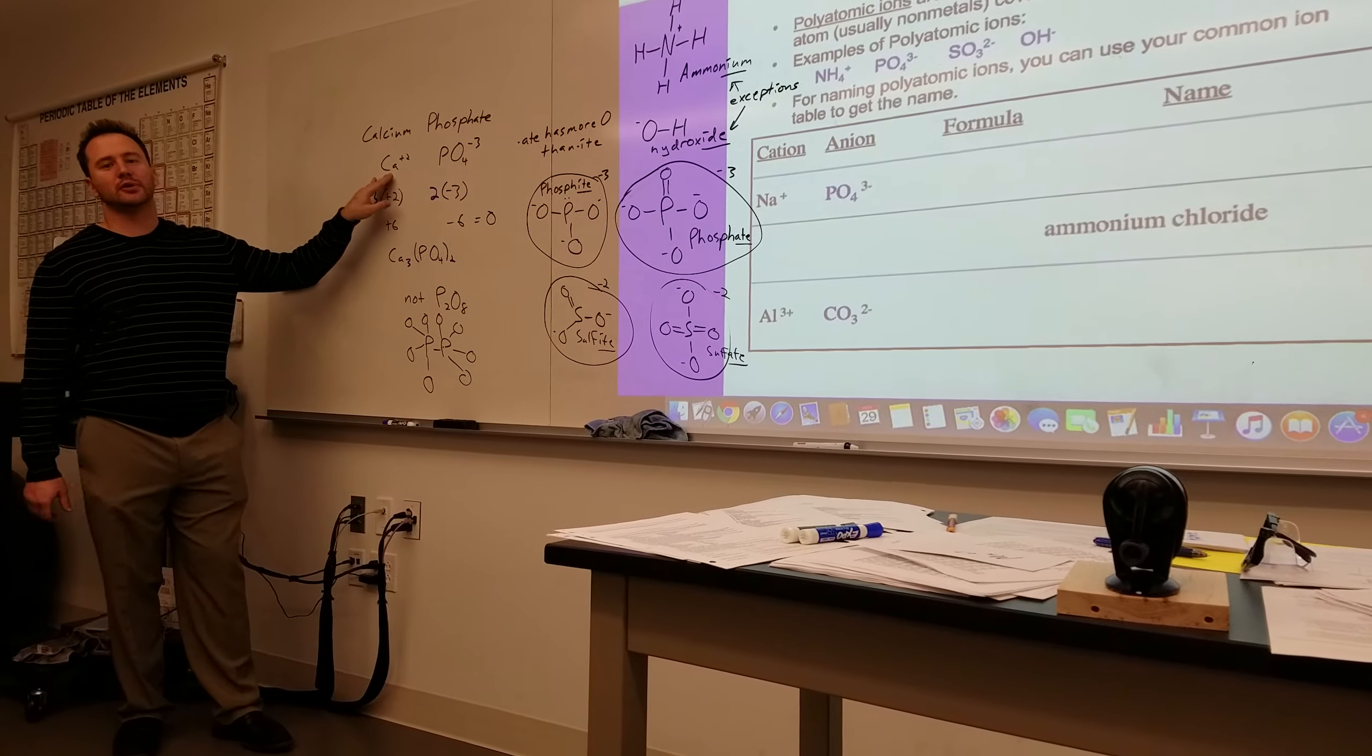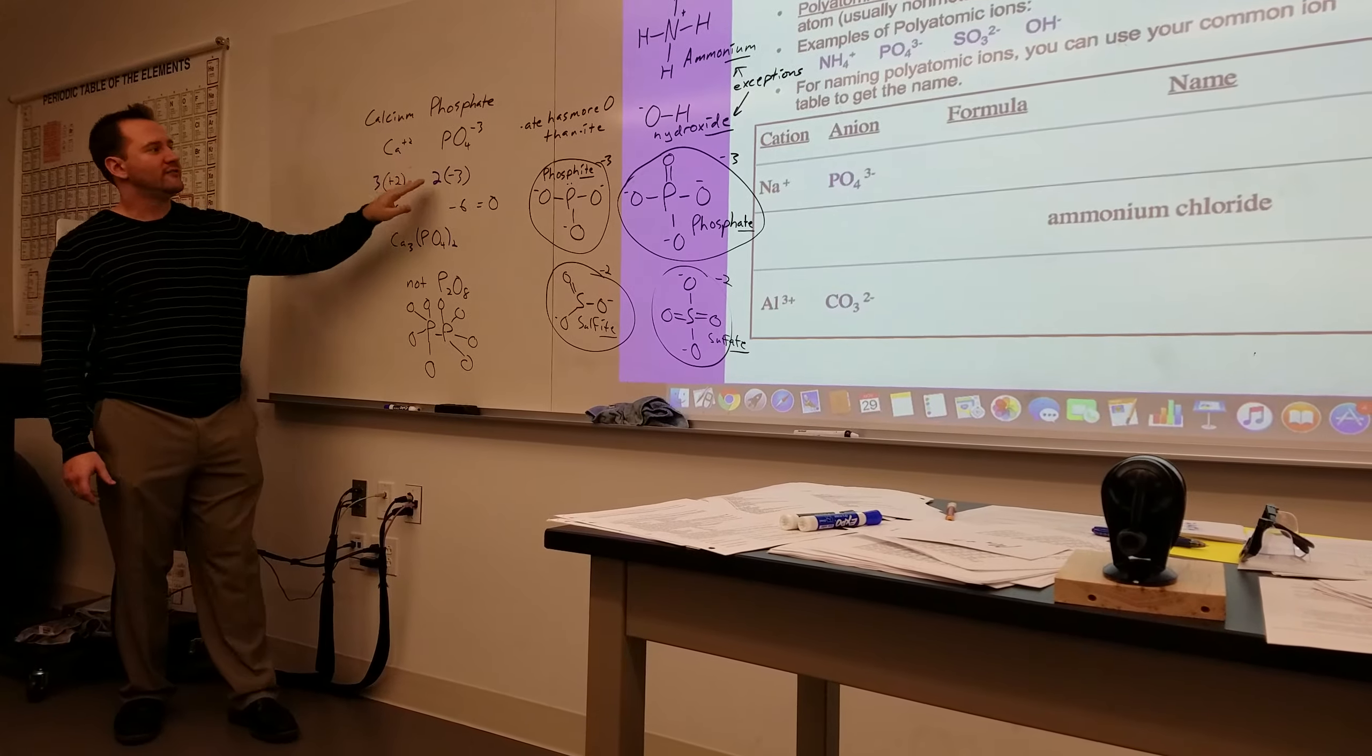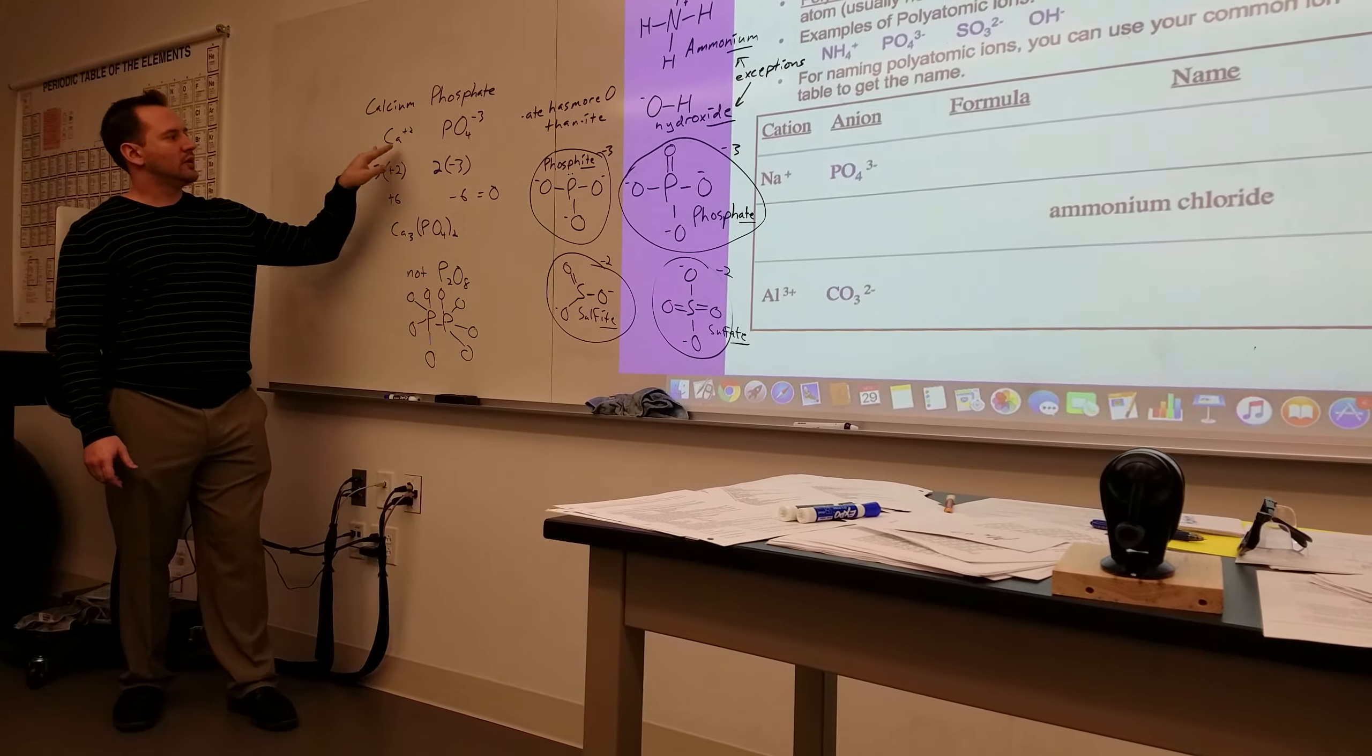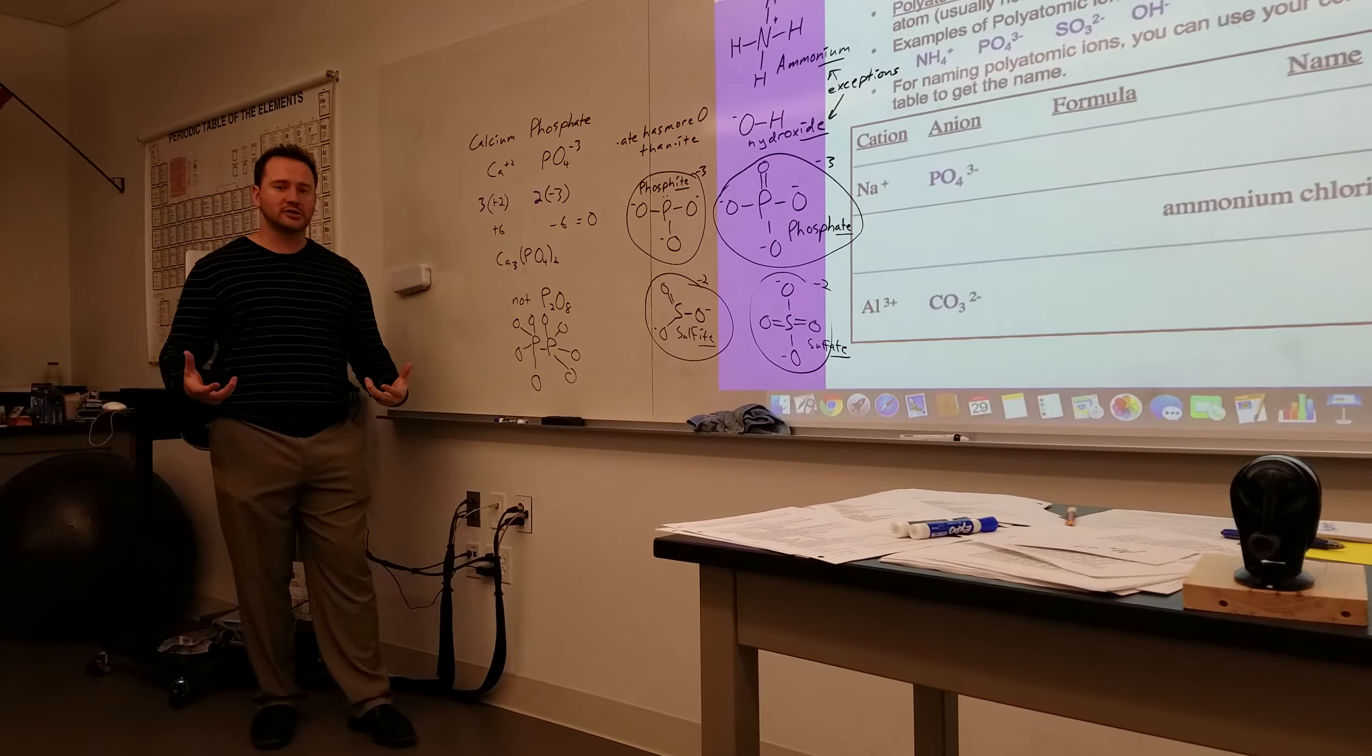Calcium, you know, is a main group element of plus two. If I gave you a transition metal, it would need a Roman numeral to tell you the charge. Phosphate is always negative three. So you have to find the ratio these two would combine, and again, you need them to balance each other out.